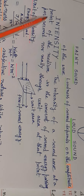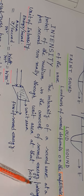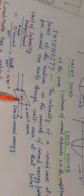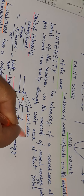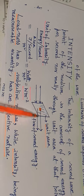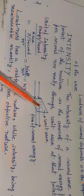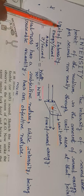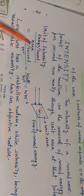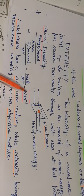The intensity of a sound at a point in the medium is the amount of sound energy passing per second normally through unit area at that point. The unit area is perpendicular to the flow of sound energy. The unit of intensity is watts per meter squared — W per m², or W·m⁻².